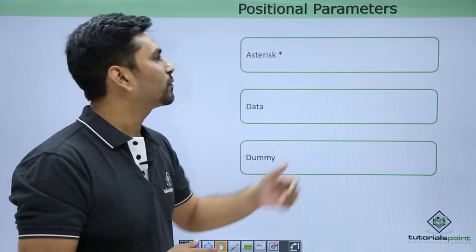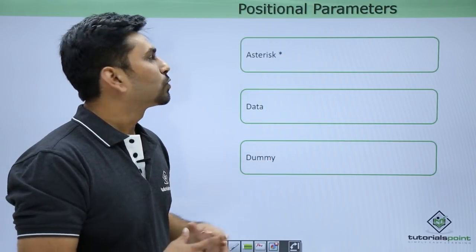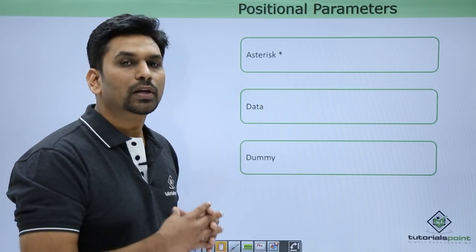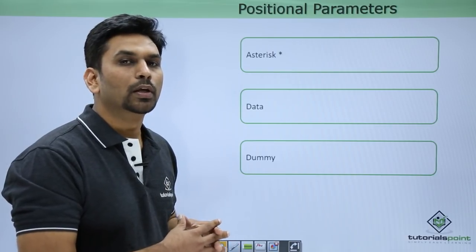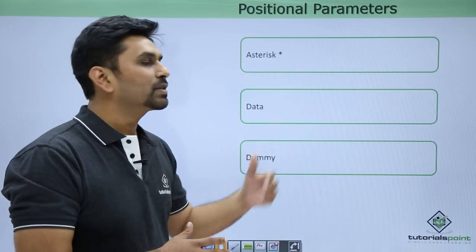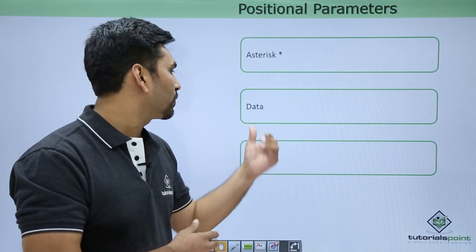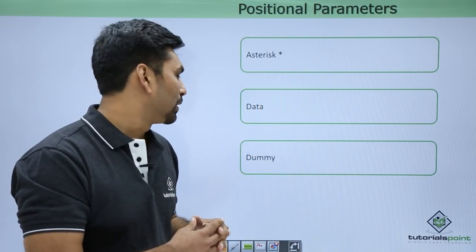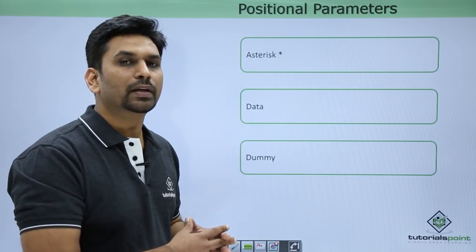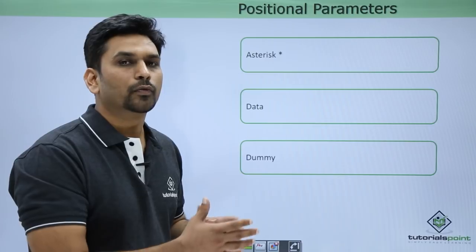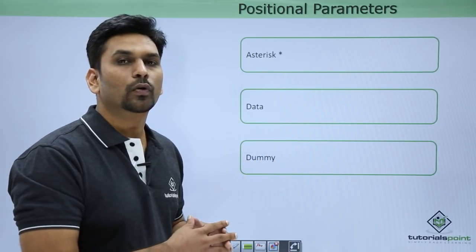We have three positional parameters: asterisk, data, and dummy. If we choose asterisk, all the data, all the output messages or whatever is in the file, will be printed to the spool — the spool is our output. If you want to pass data, you use SYSIN DD data and can pass data to COBOL modules. Dummy is a dummy dataset — no data will be printed. It is used when a dataset is mandatory for any procs or IBM utilities but we do not want to provide any dataset.